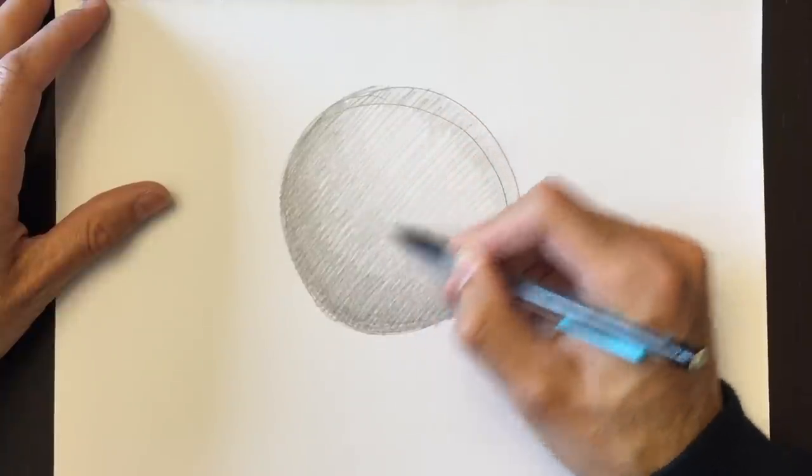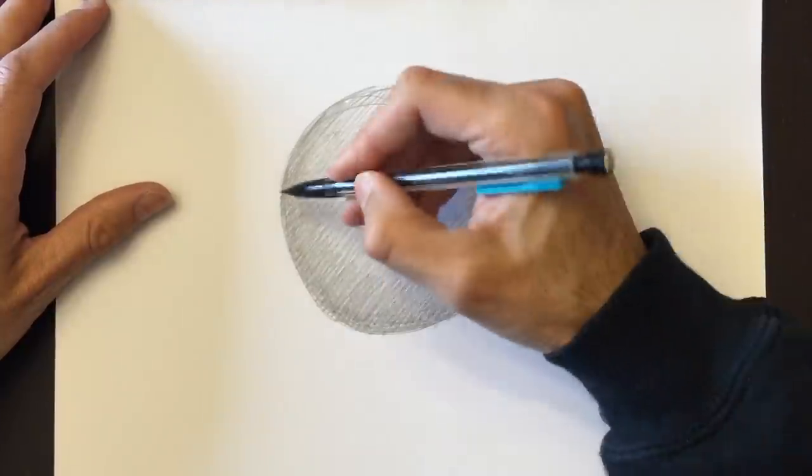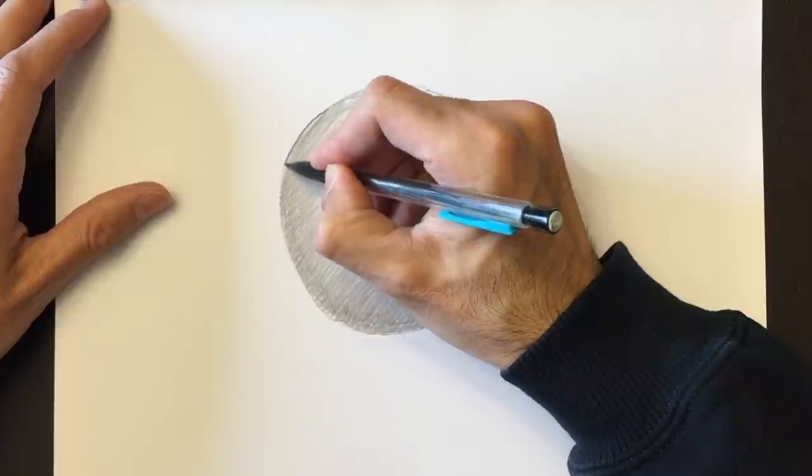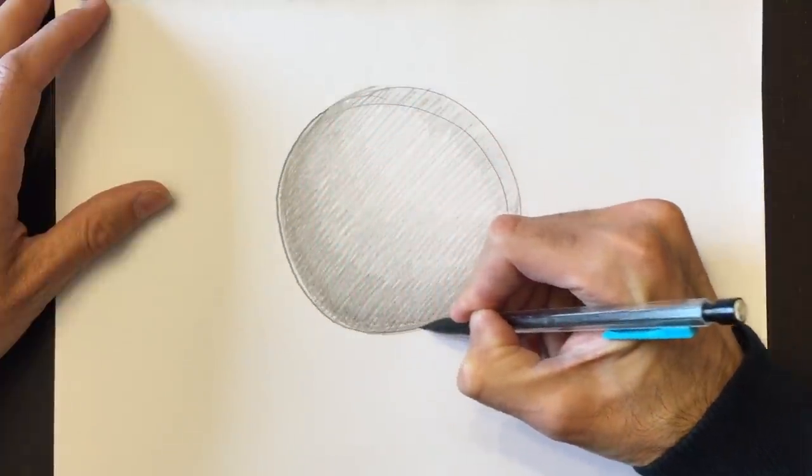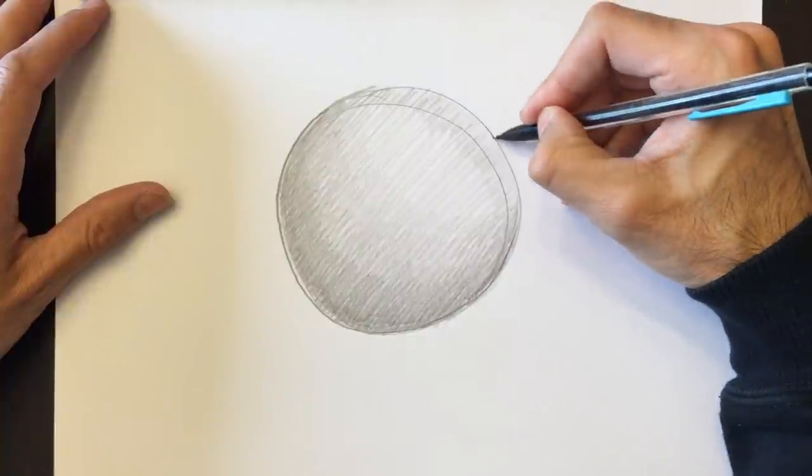And there we go. So what I have, therefore, is a spherical shape which has been shaded. The bottom part is very dark. And as my lead moves along its way up the sphere, I'm making it lighter and lighter.